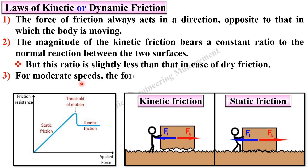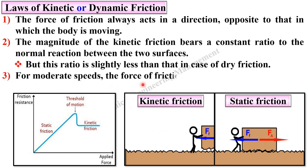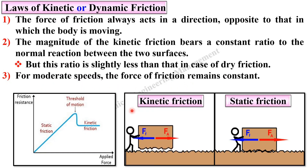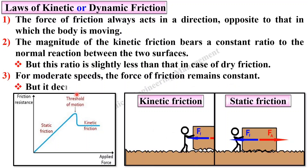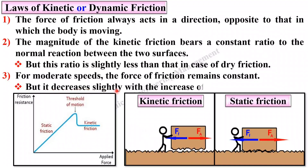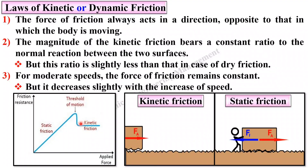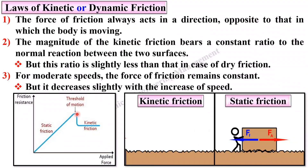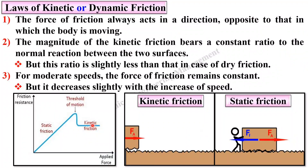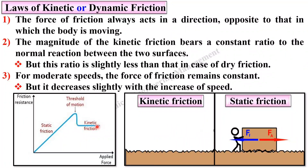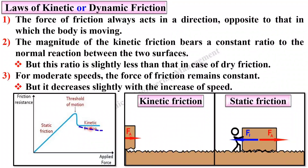For moderate speeds, the force of friction remains constant, but it decreases slightly with the increase of speed. As you can see in this figure, for moderate speeds the kinetic friction remains constant, but decreases slightly with increasing speed.